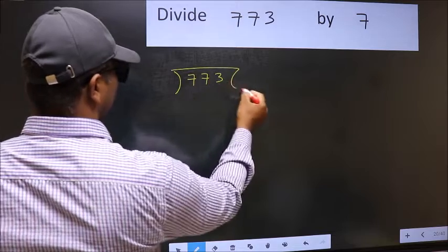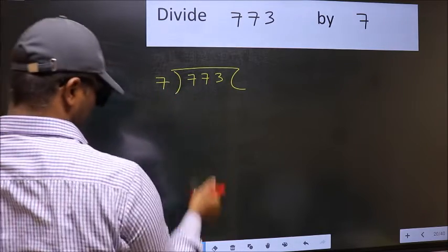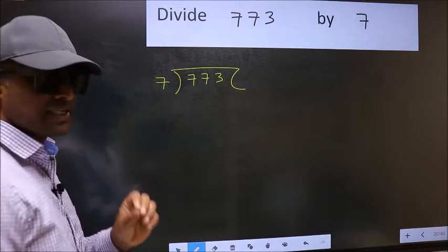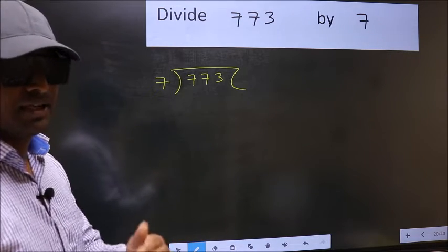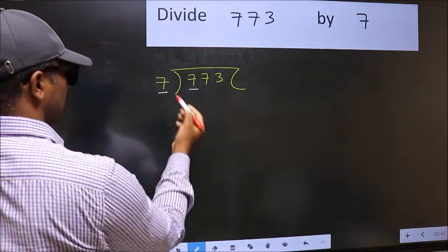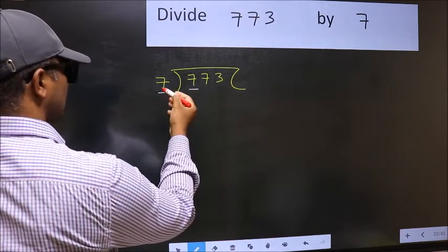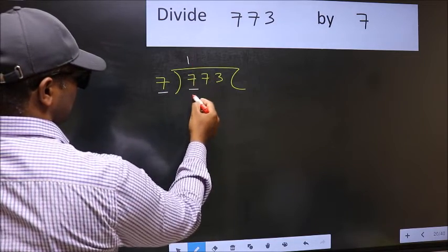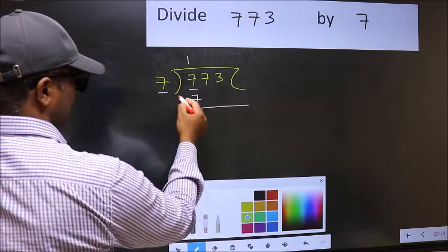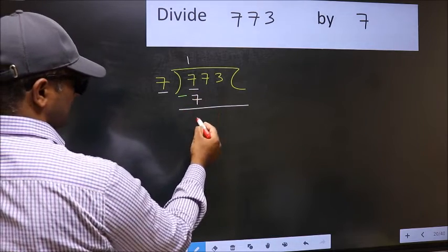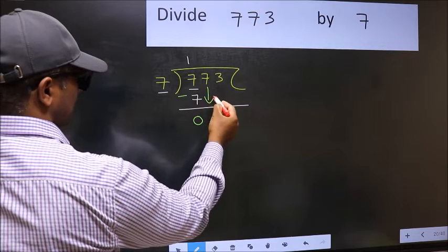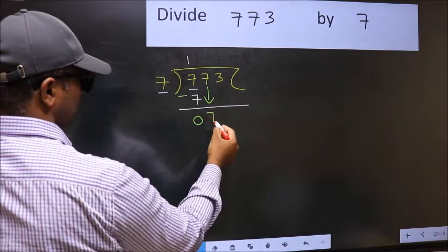773 and 7 here. This is your step 1. Next, here we have 7 and here also 7. When do we get 7 in 7 table? 7 once, 7. Now you should subtract. 7-7, 0. After this, bring down the beside number. So 7 down.